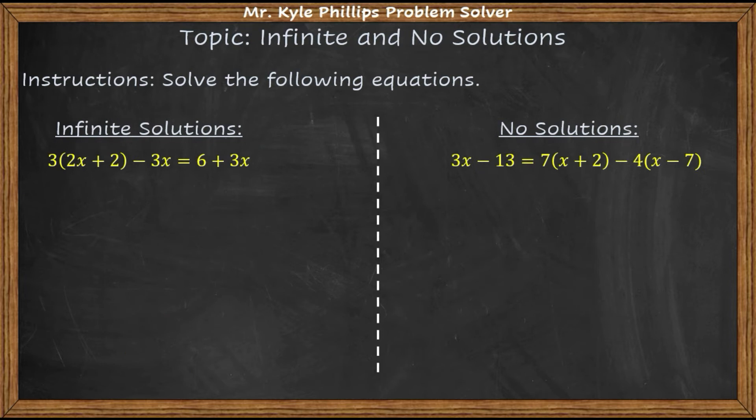So here, this problem is going to yield an infinite solution. And then this problem here will yield no solution. So let's see what these look like. So 3 times 2x is 6x. 3 times 2 is 6 minus 3x equals 6 plus 3x.